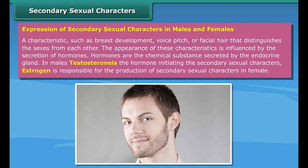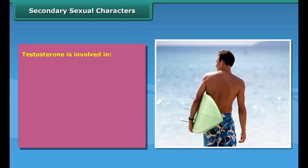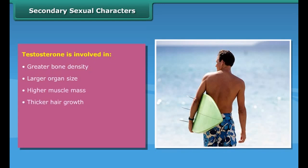The testes (male sex organs) start to produce sperms, and the ovaries (female sex organs) enlarge in size and the eggs begin to mature. Female puberty includes the menstrual cycle. Secondary sexual characters: The sudden change in the appearance of the body during the arrival of adolescence is known as secondary sexual characters. Some examples are voice change, beards and mustaches in males, and appearance of pimples, increase in height, and acne in females.